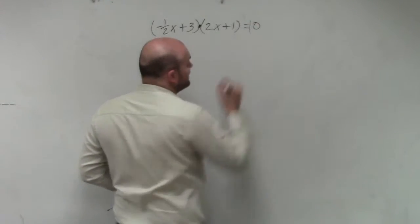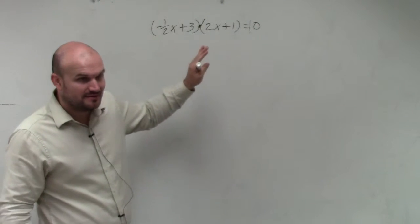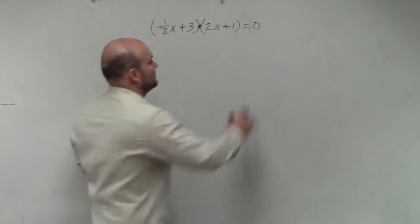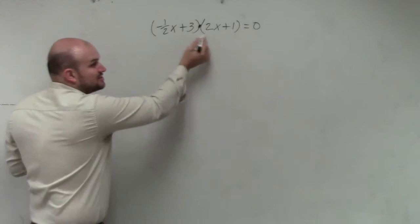only when it's equal to 0. If this was 10, you can't do the zero product property. You can't set them both equal to 10. That's not going to help us do anything. Only when it's set equal to 0. And that's just the product.